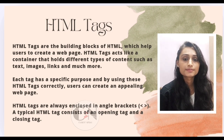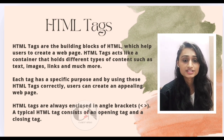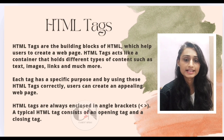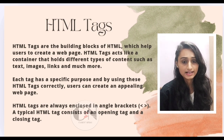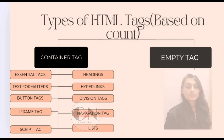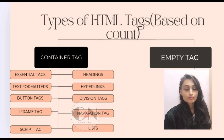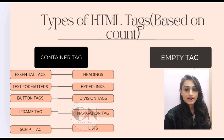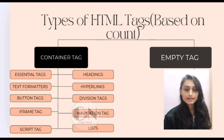A basic HTML tag consists of a starting tag and an ending tag, that is an opening and closing tag. There are two types of HTML tags: number one, container tag, and number two, empty tag.